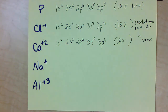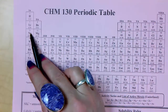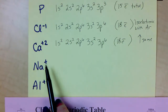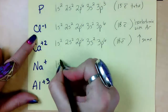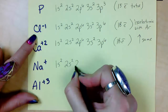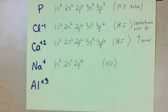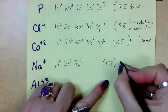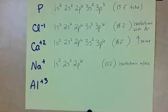Let's try Na⁺. Sodium is number 11, so 11 protons, and the atom has 11 electrons. But sodium plus 1 means it lost an electron, so it's actually down to 10. Filling in up to 10: 1s2, 2s2, 2p6 — 2+2+6=10. We're done. Number 10 is neon, which also has 10 electrons. So Na⁺ is isoelectronic with neon.